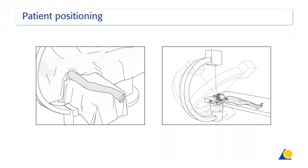The patient is positioned supine on the operating table with the arm prone. After reduction has been achieved, the arm should be moved as little as possible. Images should be obtained by rotating the C-arm and not moving the arm.